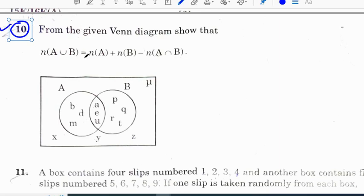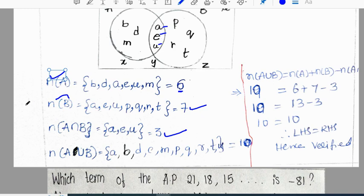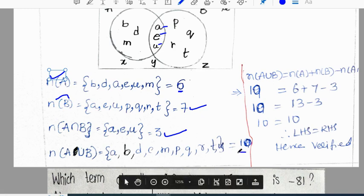From the Venn diagram, show that n(A ∪ B) = n(A) + n(B) - n(A ∩ B). In the diagram, A contains a, b, d, e, u, m with n(A) = 6 elements. B contains a, u, u, p, q, r, t with n(B) = 7 elements. n(A ∩ B) = 3 elements, and n(A ∪ B) = 10 elements. Don't consider x, y, z as they are outside A ∪ B.